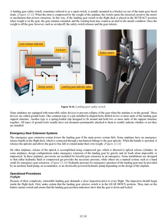Emergency Gear Extension Systems. The emergency gear extension system lowers the landing gear if the main power system fails. Some airplanes have an emergency release handle in the flight deck connected through a mechanical linkage to the gear uplocks; when the handle is operated, it releases the uplocks and allows the gear to free fall or extend under its own weight. On other airplanes, release of the uplock is accomplished using compressed gas directed to uplock release cylinders. In some airplanes where emergency extension by gravity and air loads alone is impossible, provisions are included for forceful gear extension using hydraulic fluid, compressed gas, or a manual system such as a hand crank. Hydraulic pressure for emergency operation may be provided by an auxiliary hand pump, an accumulator, or an electrically powered hydraulic pump.